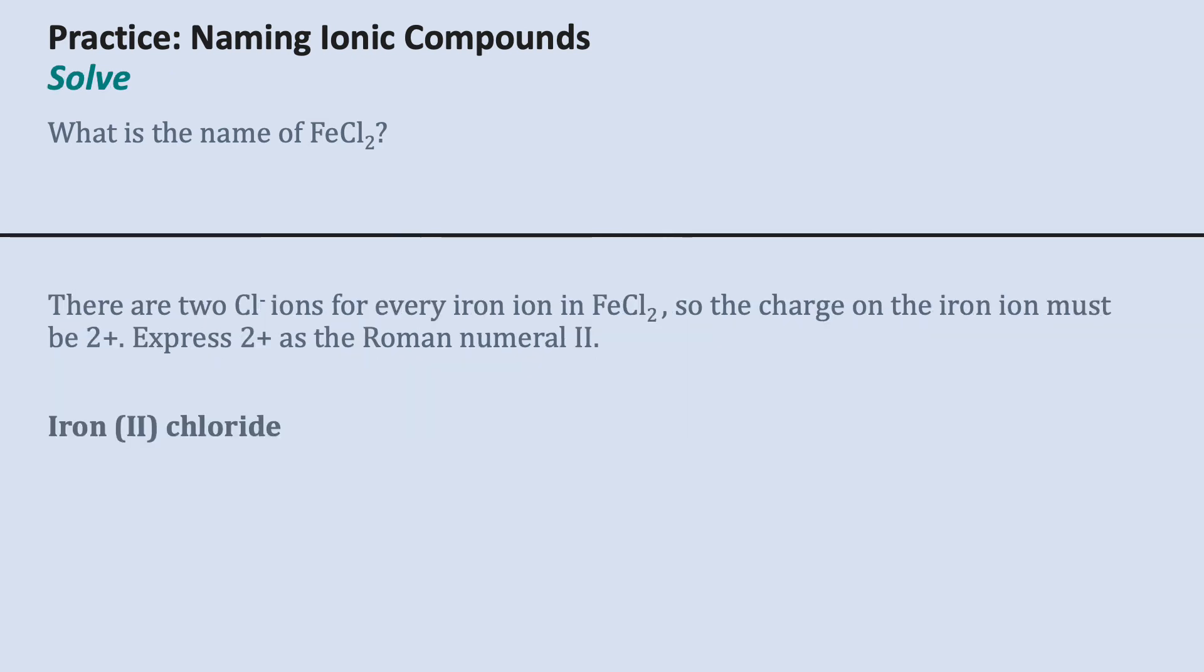There are two Cl minus ions for every iron ion in FeCl2, so the charge on the iron must be plus two.